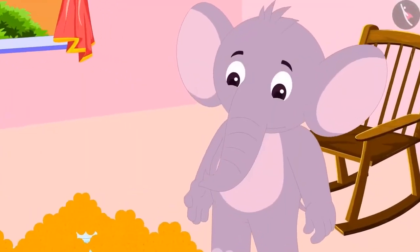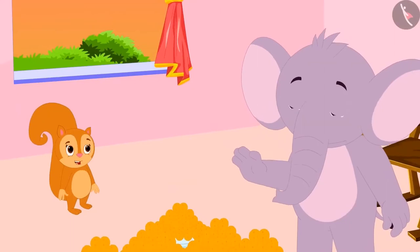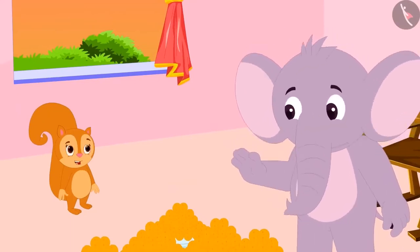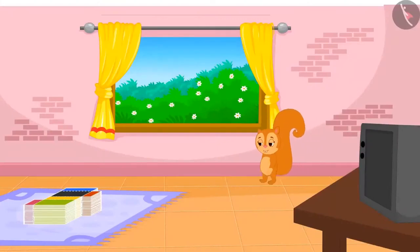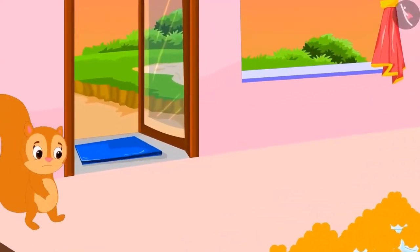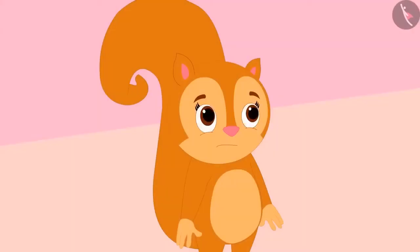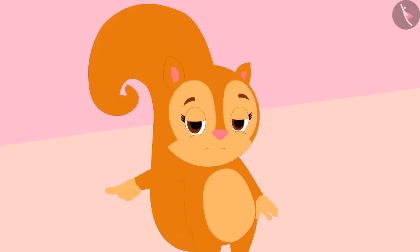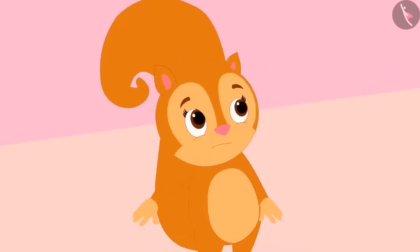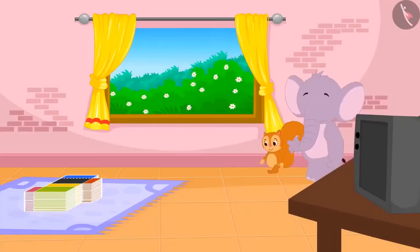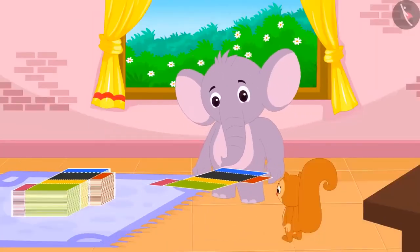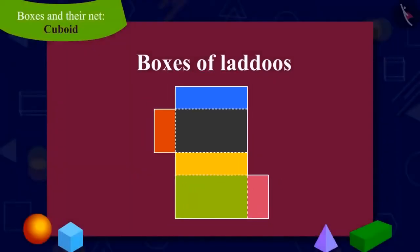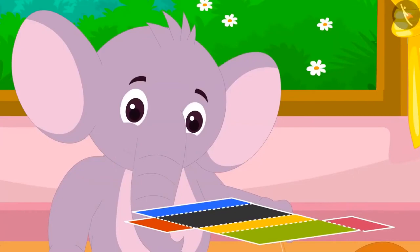Appu needs to pack laddus first. He asked Chanda to bring the empty boxes for the laddus from another room. Chanda went to the other room and came back empty-handed. Chanda told Appu that she could not see any empty boxes. Now Appu went with her and showed Chanda the cardboard cutouts, saying: here are the empty boxes of laddus.